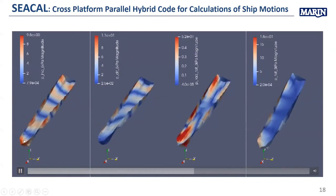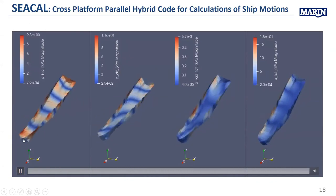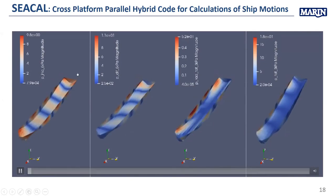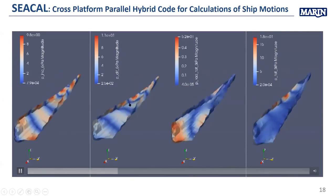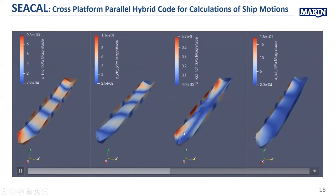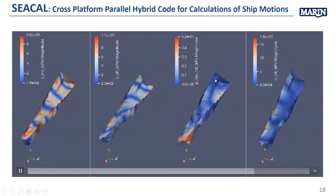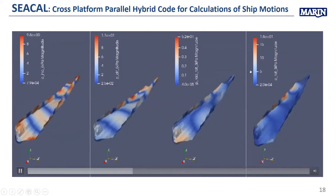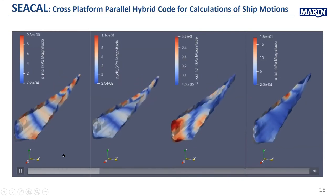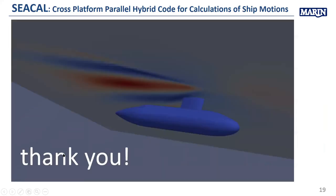These are some results showing a very flexible ship — not realistic, only for research purposes — at different time steps, showing how the passing wave moves the ship.